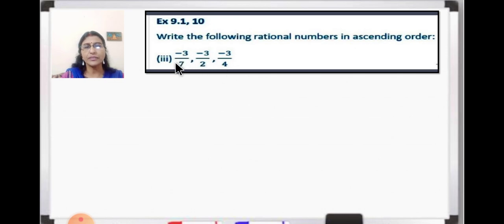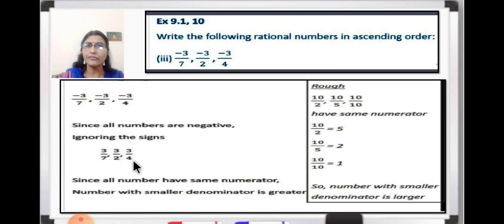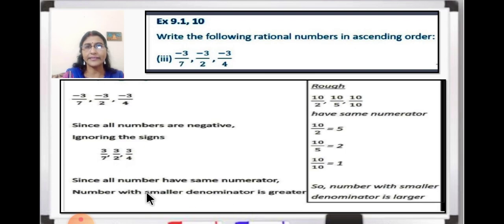Now next question: minus 3 upon 7, minus 3 upon 2 and minus 3 upon 4. Since all the numbers are negative, we are going to ignore the sign and write down the numbers: 3 upon 7, 3 upon 2 and 3 upon 4. Here you can see all the rational numbers have the same numerator. Since all the numbers have the same numerator, the number with the smaller denominator is greater.